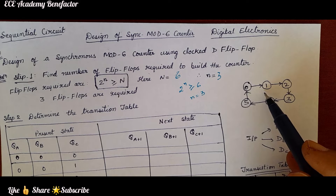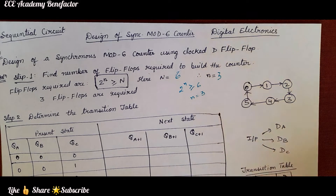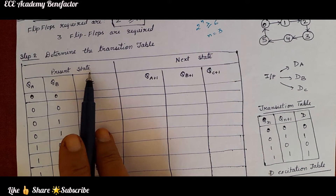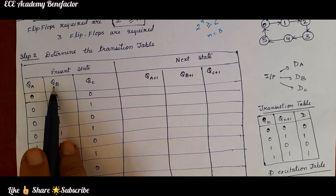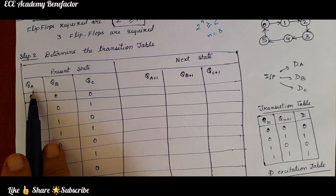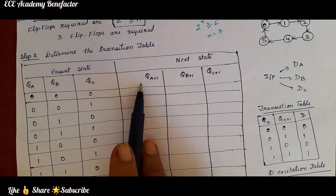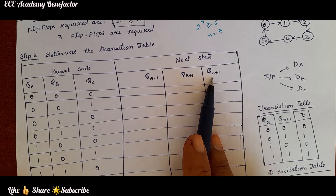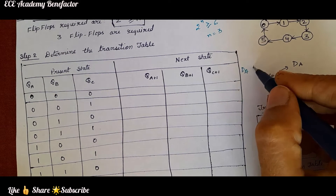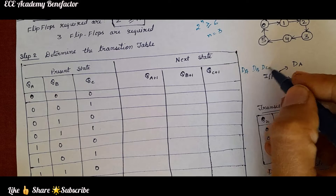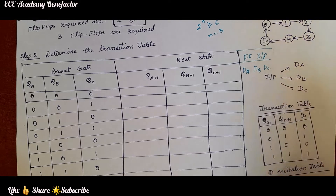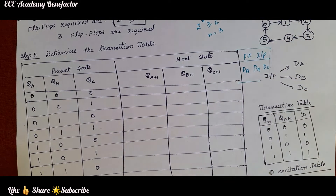So first, draw the state diagram, then determine the required flip-flops — which is 3. Now we have to draw the transition table, comprising the present state of 3 flip-flops with outputs QA, QB, QC. The next state outputs will be QA+1, QB+1, and QC+1. And the flip-flop inputs will be DA, DB, and DC — this forms the third column of the transition table.